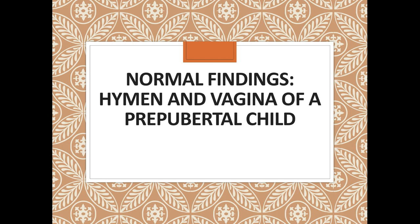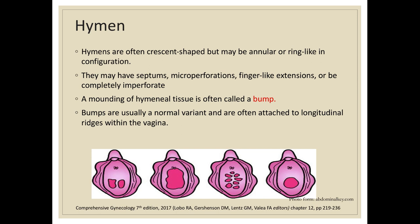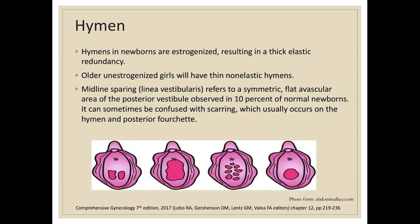Hymens are often crescent-shaped but may be annular or ring-like. Sometimes they may have a septum, microperforations, finger-like extensions, or may be completely imperforate. A mounding of hymenal tissue is called a bump and is usually a normal variant, often attached to longitudinal ridges within the vagina. Hymens in newborns are estrogenized, resulting in a thick, elastic redundancy, while older unestrogenized girls will have thin, non-elastic hymens. Midline sparing, or the linea vestibularis, refers to a symmetric flat avascular area of the posterior vestibule observed in 10% of normal newborns, and can sometimes be confused with scarring.